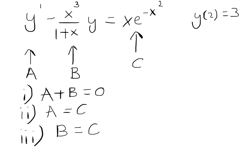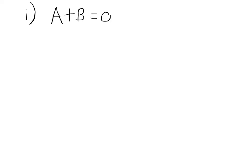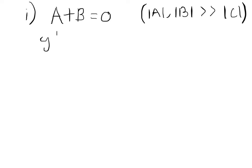We now need to check the consistency in each of these cases. Let's start with the first equation. Case one: we have A plus B equal to zero, and we're assuming that the absolute values of A and B are greater than, or more dominant than, the absolute value of C at large x. So if we write this out, we have y prime minus x cubed over 1 plus x times y is equal to zero. Since we're considering what happens at large x, we can approximate the second term to x squared, as the constant in the denominator disappears at large x. So we end up with y prime equal to x squared y.